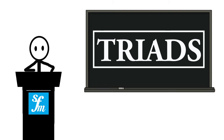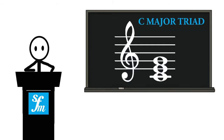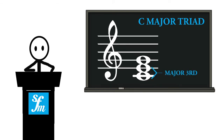When the triad is in its root position — that is to say when the note name of the chord is on the bottom — the three notes are always in thirds. Here is the C major triad. C is on the bottom so it's in root position. C to E is a major third and E to G is a minor third.